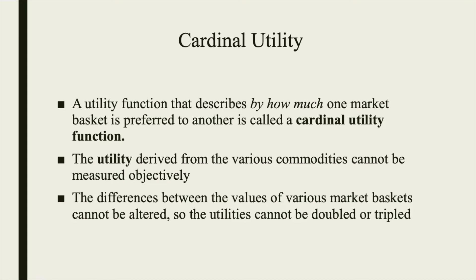The objective of economists is to understand consumer behavior. So all that matters is knowing how consumers rank different baskets, and it is difficult to compute the utility of various market baskets. Therefore, we usually work only with ordinal utility functions and not cardinal utility functions. I hope these concepts are clear. Thank you.